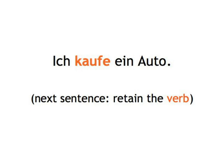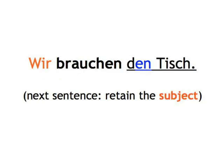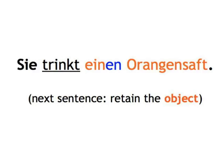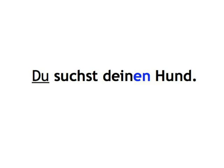For example: 'Ich kaufe ein Auto.' — 'Er kauft einen Tisch.' (verb retained) — 'Wir brauchen den Tisch.' (object retained) — 'Wir trinken ein Glas Wein.' (subject retained) — 'Sie trinkt einen Orangensaft.' (verb retained) — 'Du presst den Orangensaft.' (object retained) — 'Du suchst deinen Hund.' (subject retained). Not as easy as it looks! Some of these games may seem somewhat childish, but do you really prefer to read through your vocab list ten times and still not know the words — let alone how to use them?